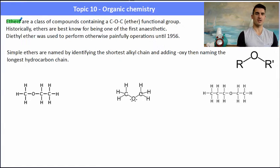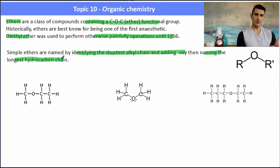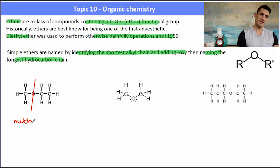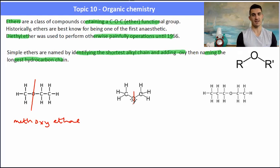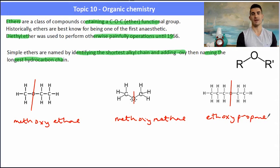Ethers are a class of compound containing the COC functional group — carbon single-bonded to an oxygen, single-bonded to another carbon, different from the ketone functional group. Ethers are named by identifying the shortest alkyl chain and adding '-oxy', then naming the longest hydrocarbon chain. Think about cutting the ether at the oxygen. Here we have a methyl and an ethyl group — methyl is the shortest, so we say 'methoxy', and then we name the longest part which is ethane: methoxyethane. Here we have two methyl groups so we name it methoxymethane. The far right example: cut at the functional group — we have ethane, so 'ethoxy', and then something with three carbons: ethoxypropane.